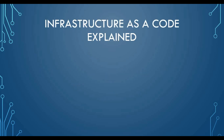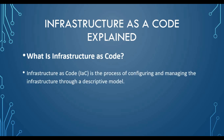Let's talk about what infrastructure as code, or IAC, is. A simple definition: infrastructure as code is the process of configuring and managing infrastructure through a descriptive model. Configuring and managing infrastructure means it can be any of your virtual machines, servers, storage, or network — anything that is part of your infrastructure.